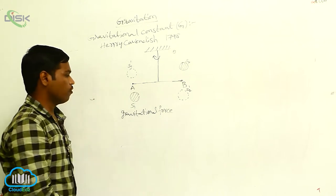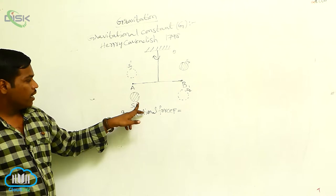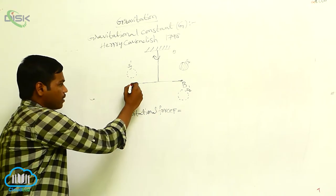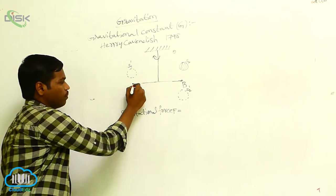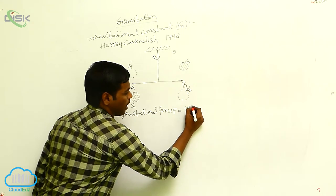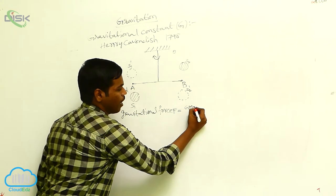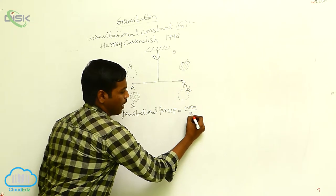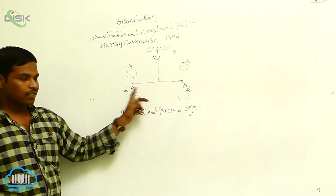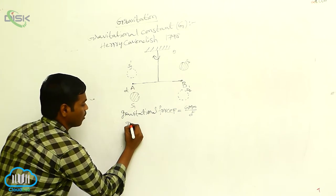The gravitational force F is defined where capital M is the mass of the bigger sphere, small m is the mass of the smaller sphere, and small d is the distance between the two spheres. The gravitational force of attraction between the two spheres is F = GMm/d².